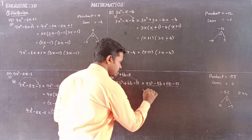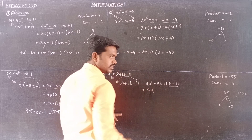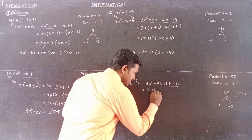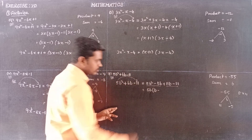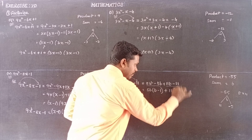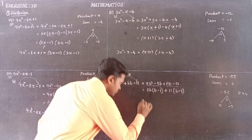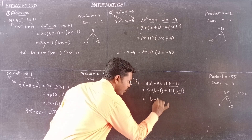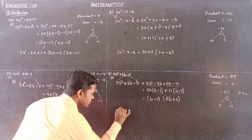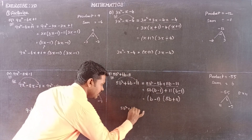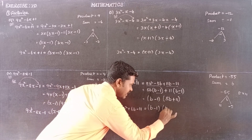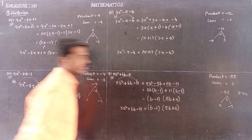Grouping: in the first group, 5b is the common factor giving 5b(b minus 1). In the second group, plus 11 is common giving 11(b minus 1). So b minus 1 is the common factor, with remaining factor 5b plus 11. Therefore, 5b squared plus 6b minus 11 equals (b minus 1)(5b plus 11). Thank you.